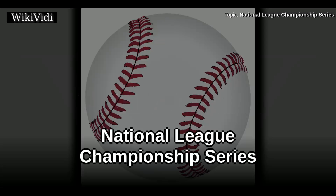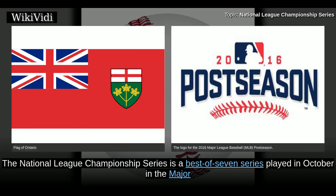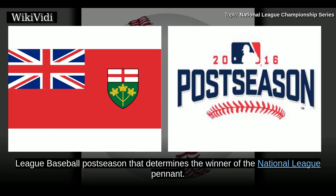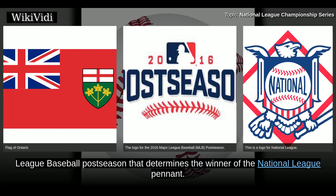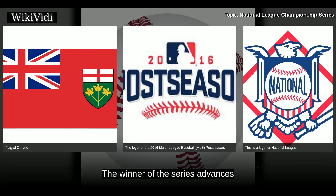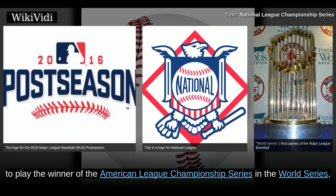National League Championship Series. The National League Championship Series is a best-of-seven series played in October in the Major League Baseball postseason that determines the winner of the National League pennant. The winner of the series advances to play the winner of the American League Championship Series in the World Series.